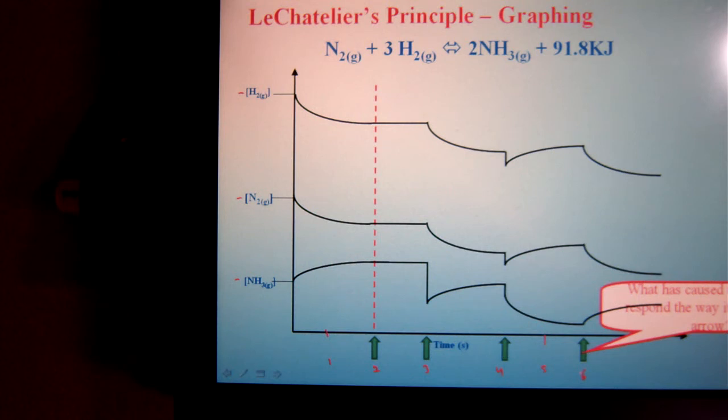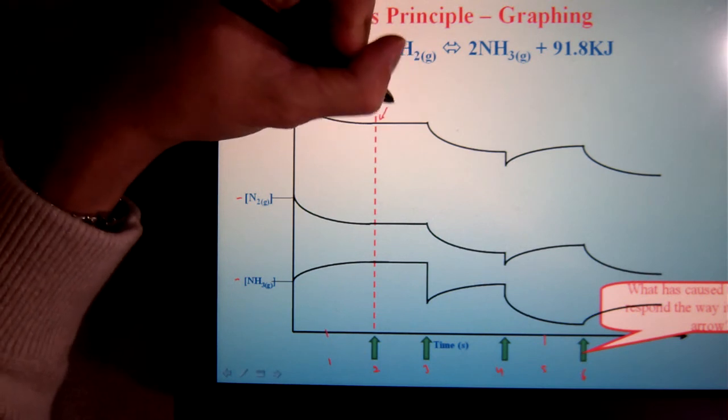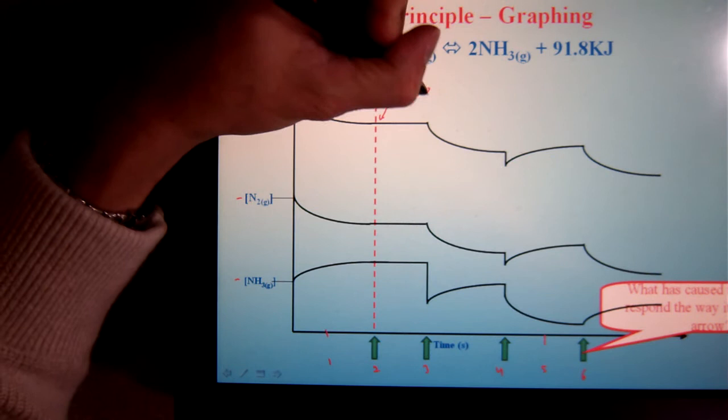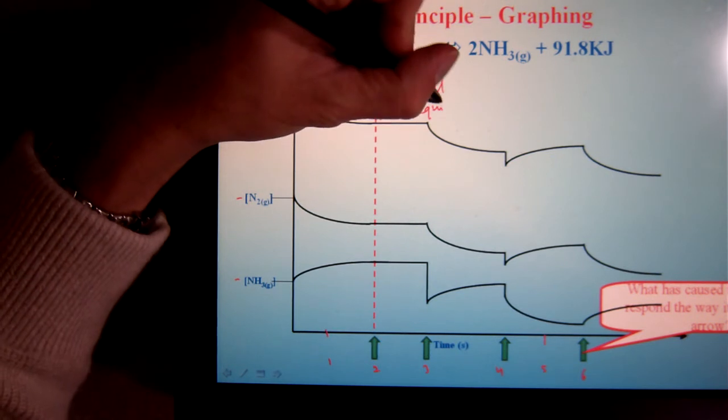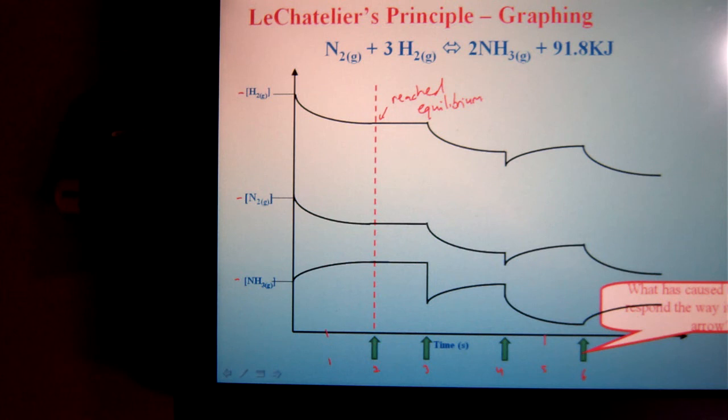Well at time two, we see that all of the concentrations have leveled out. So chances are what has happened at this point is we have now reached equilibrium. All the concentrations have stopped changing, therefore the reaction has been finalized.